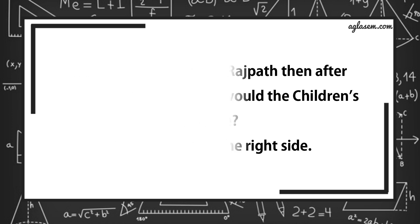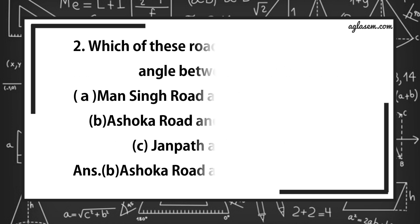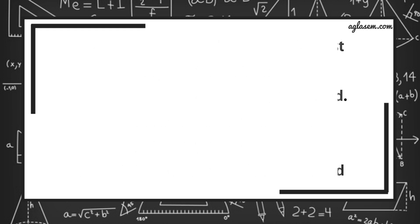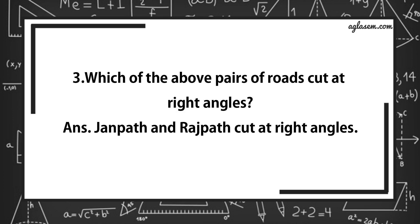Further, question number 2 says, which of these roads make the biggest angle between them? A. Man Singh Road and Shah Jahan Road. B. Ashoka Road and Man Singh Road. C. Janpath and Rajpath. Answer is B, that is Ashoka Road and Man Singh Road. Further, question number 3 says, which of the above pair of roads cut at right angle? Answer is, Janpath and Rajpath cut at right angles.